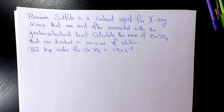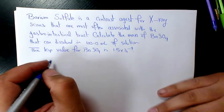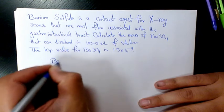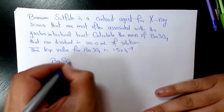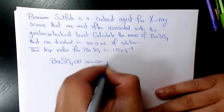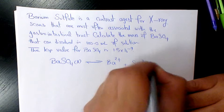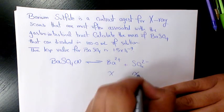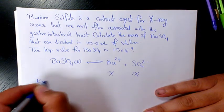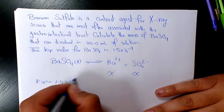The KSP for this compound BaSO4 is 1.5 times 10 to the power of negative 9. So we have this compound BaSO4, barium sulfate. When it dissolves, it's gonna produce barium ion and sulfate ion. It's gonna produce X and X. The KSP equals to 1.5 times 10 to the power of negative 9.